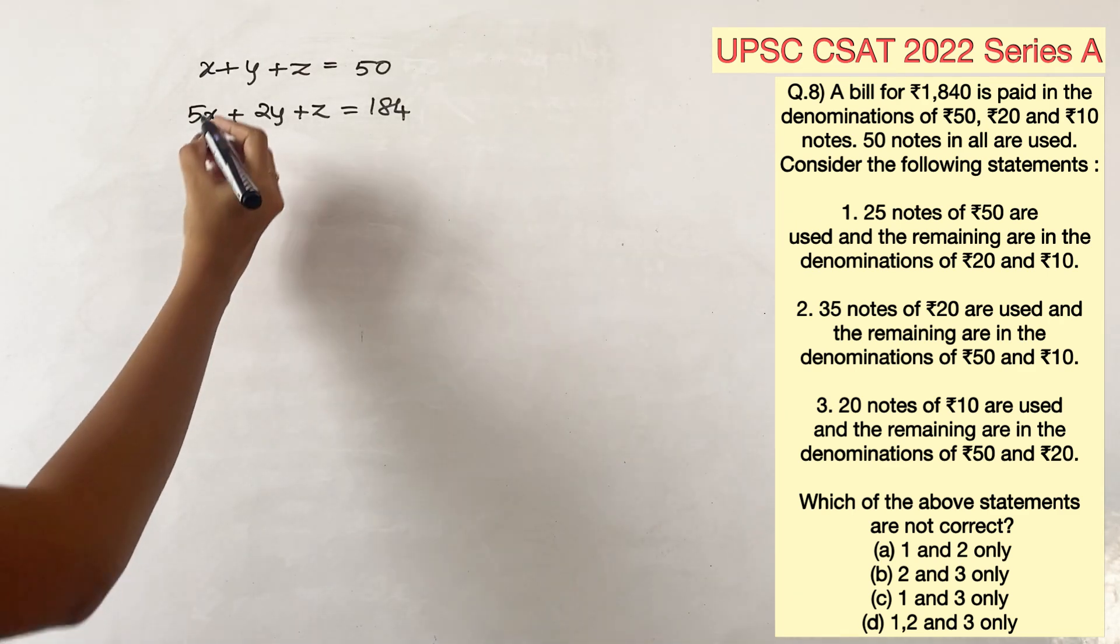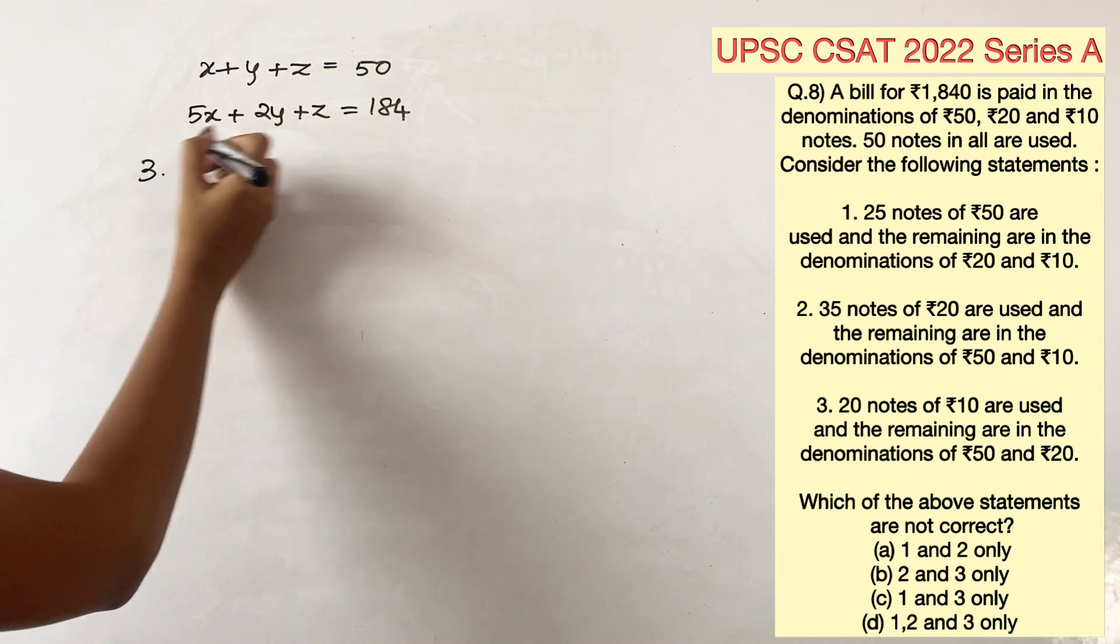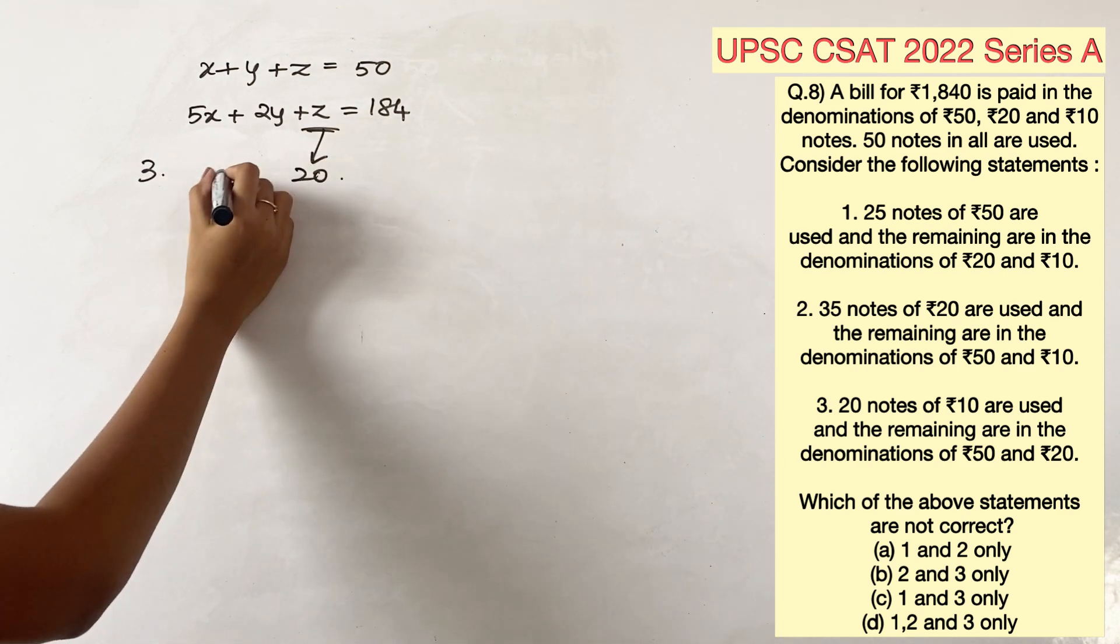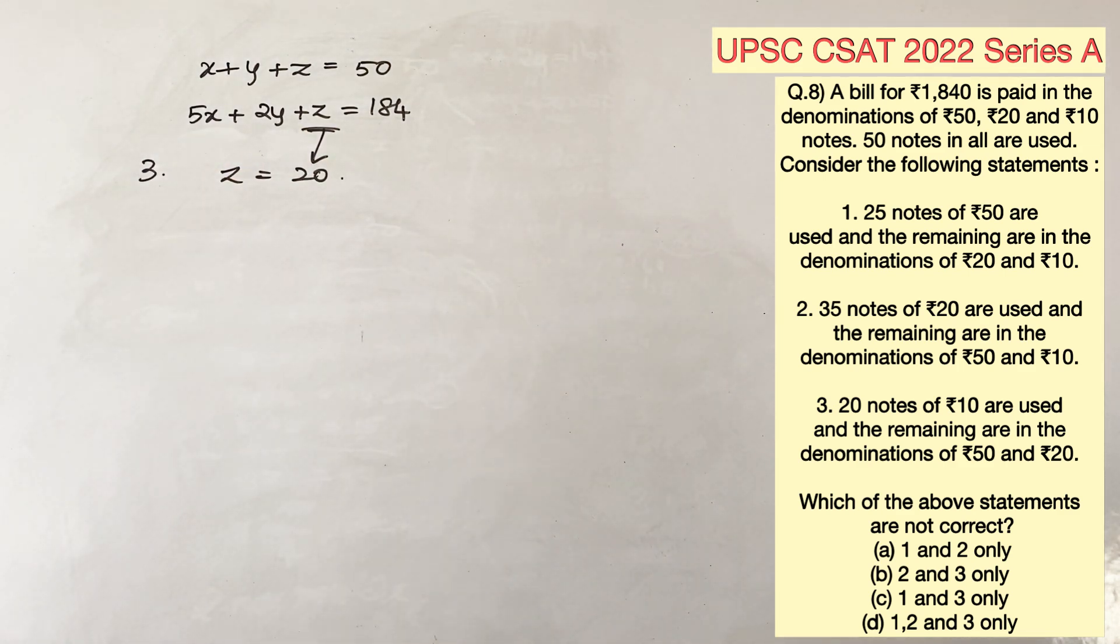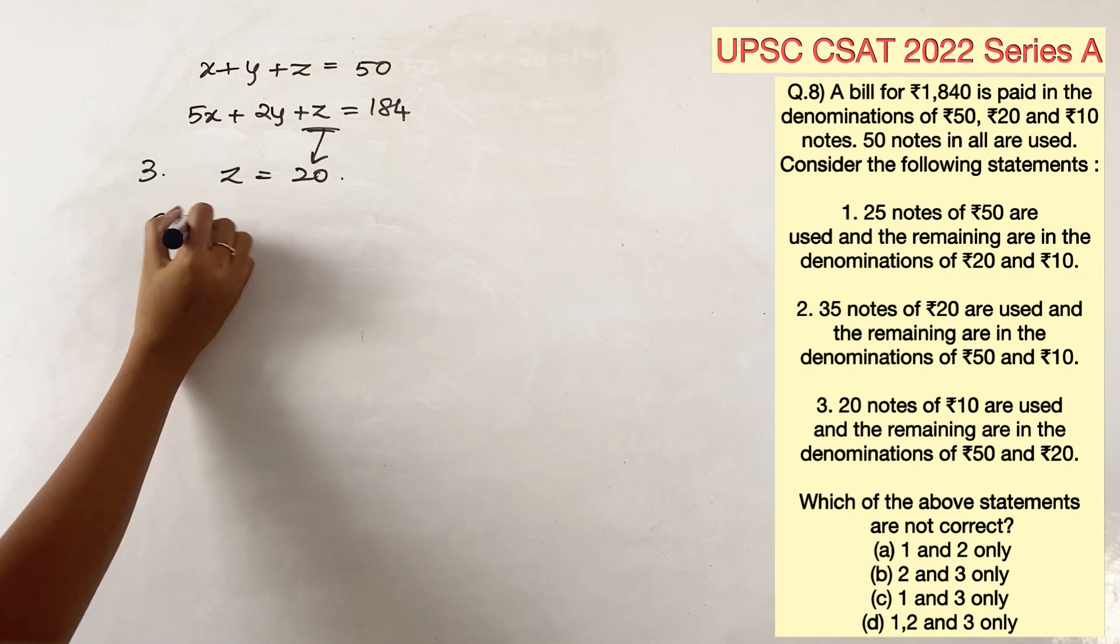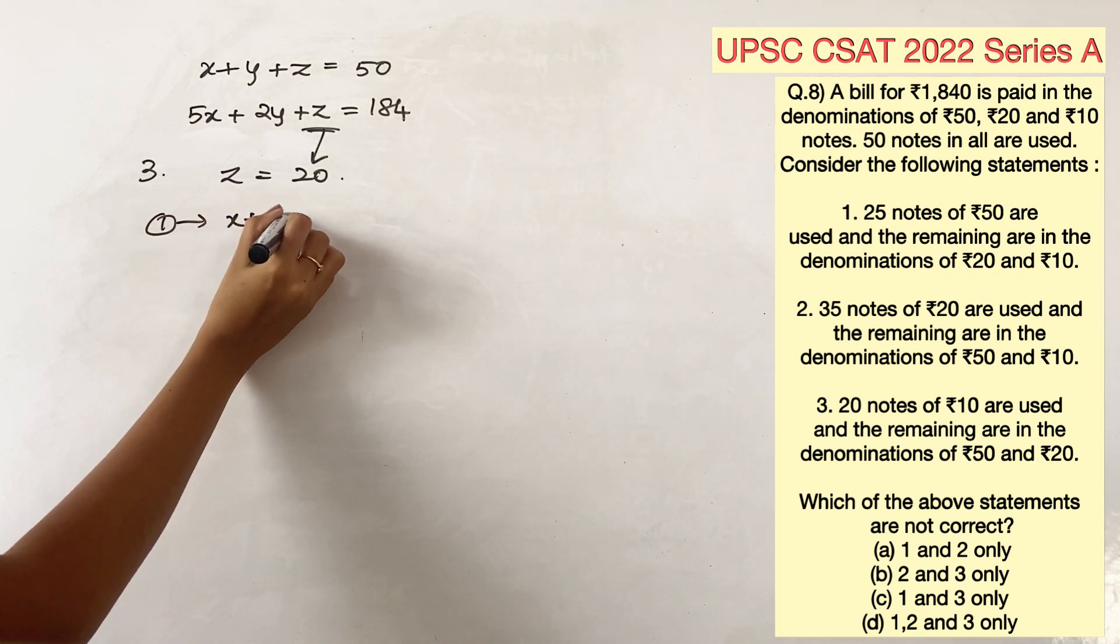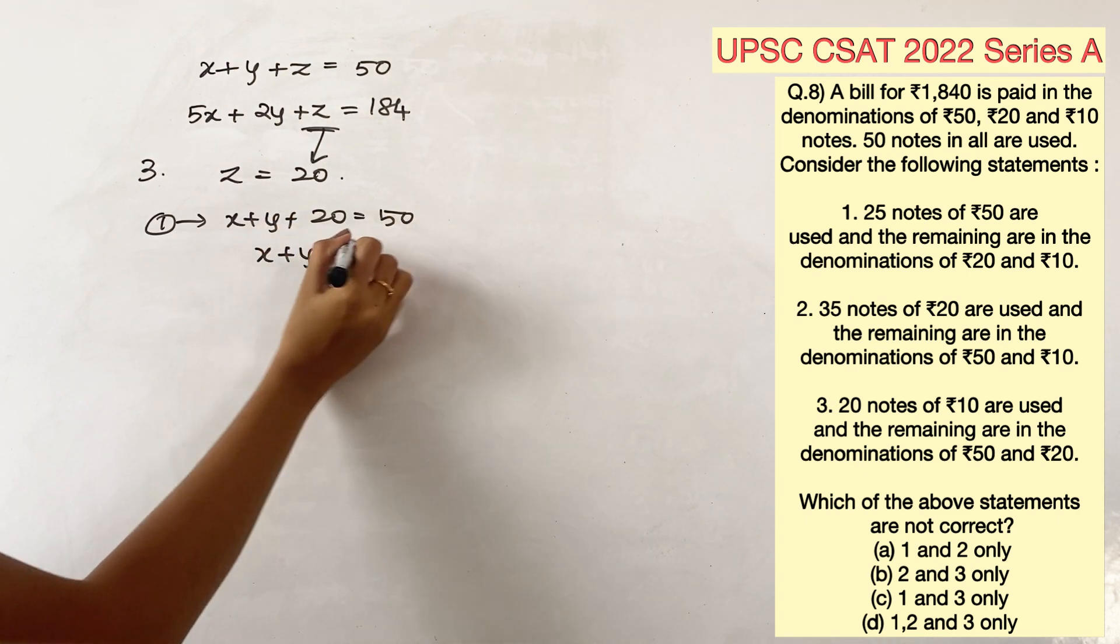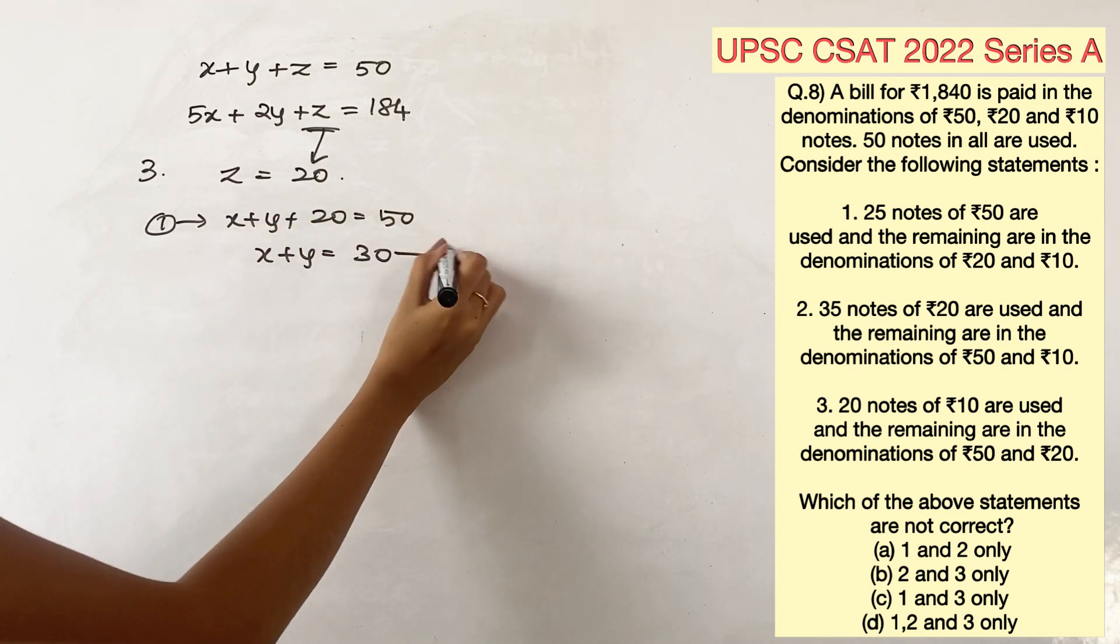The last statement says 20 notes of 10 rupees are used, and the remaining are in the denominations of 50 and 20. So, z is equal to 20. We have to substitute z in both the equations and solve it for x and y. The first equation would become x plus y is equal to 30.